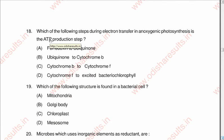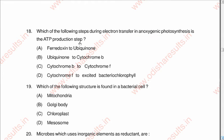Question number eighteen: Which of the following steps during electron transfer in anoxygenic photosynthesis is the ATP production step? A: ferredoxin to ubiquinone, B: ubiquinone to cytochrome b, C: cytochrome b to cytochrome f, D: cytochrome f to excited bacterial chlorophyll. The correct option is B: ubiquinone to cytochrome b.